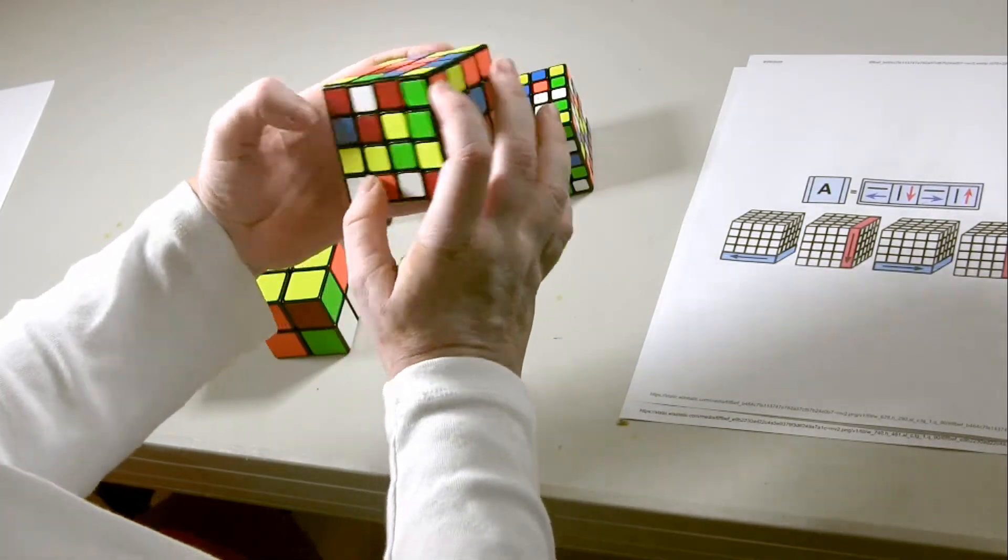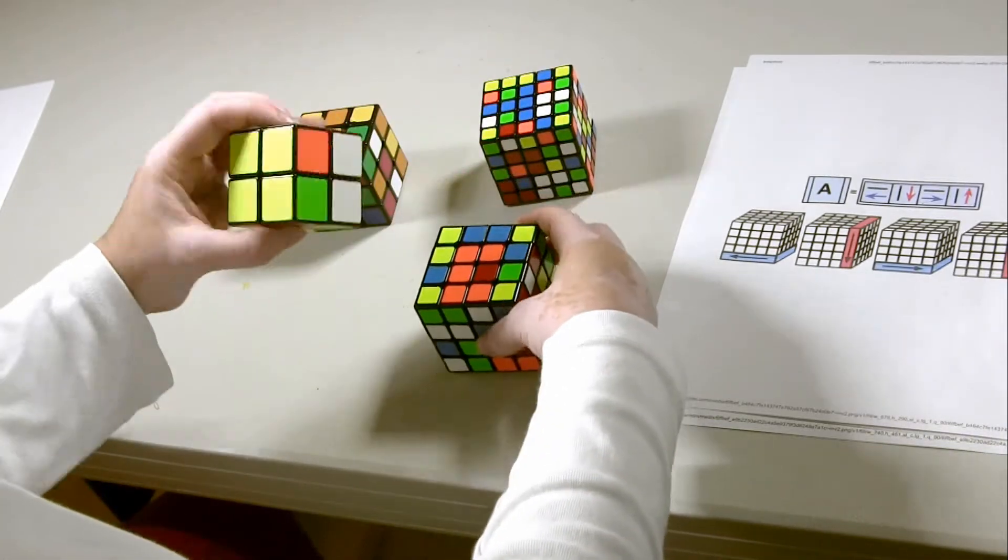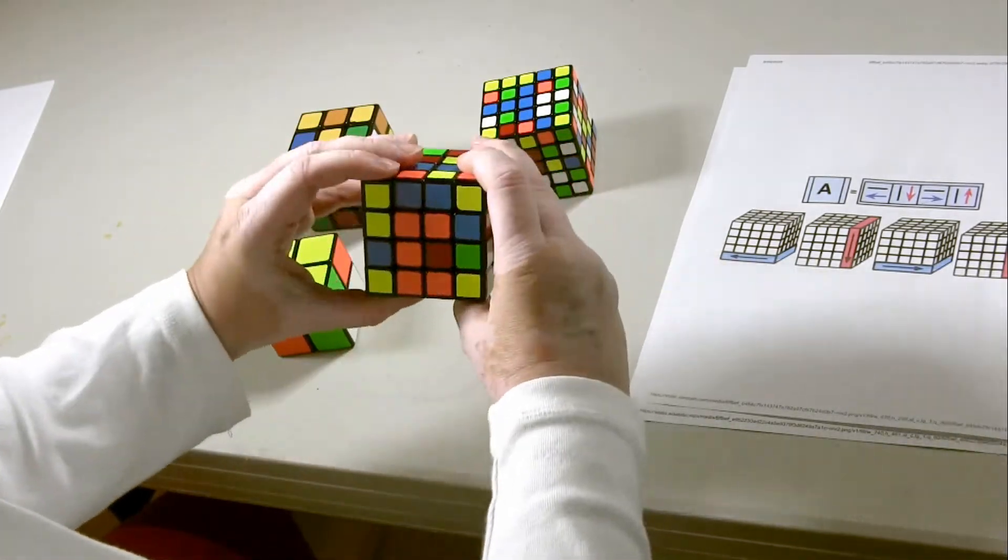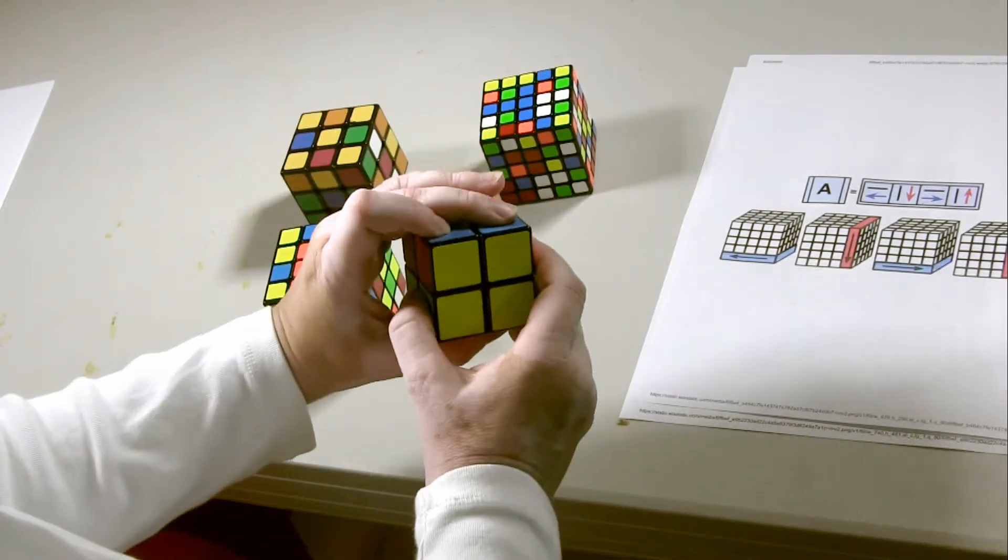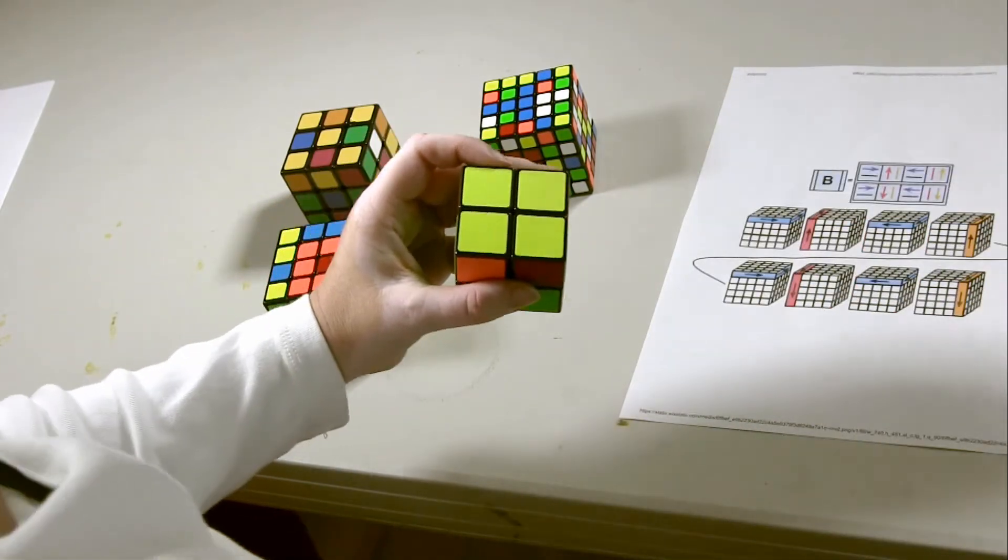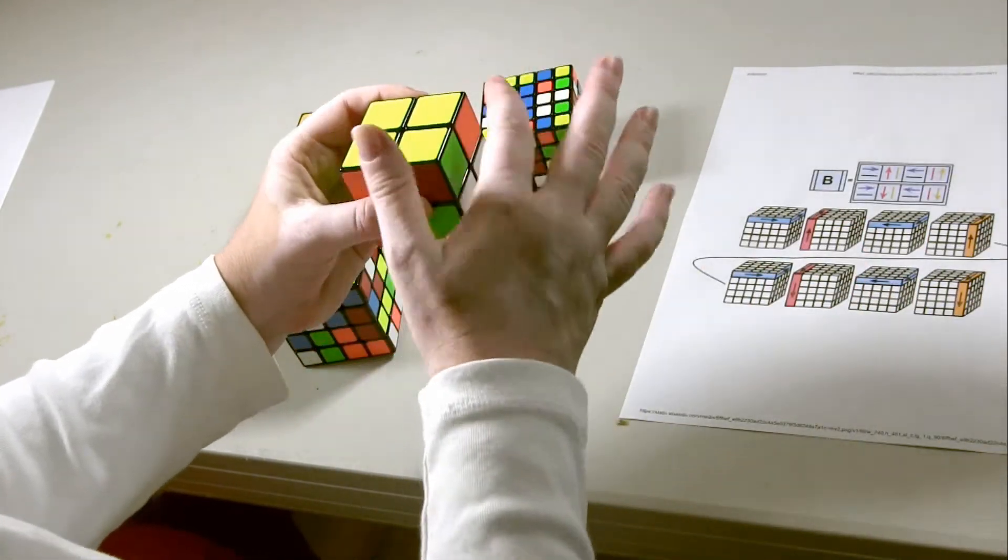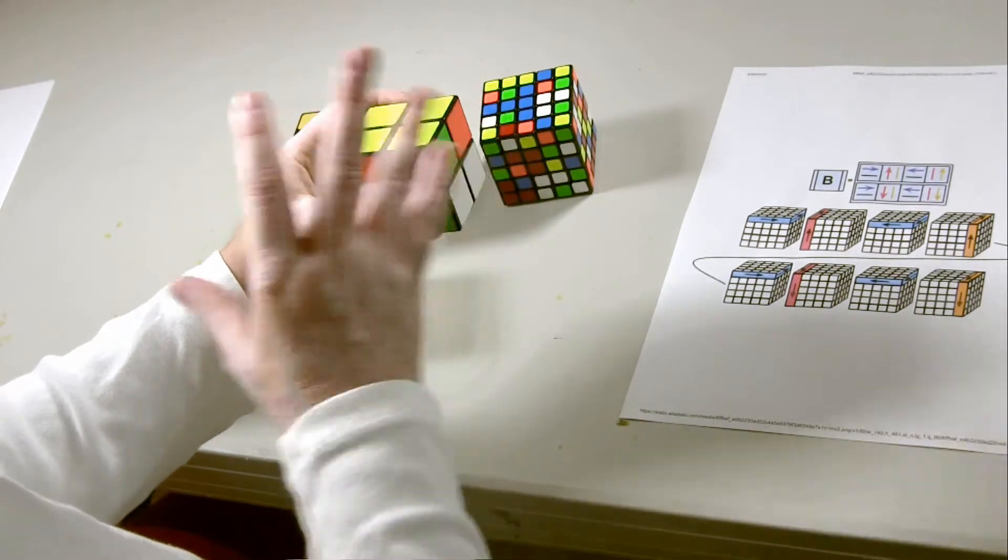There's one side that matches and the other three that do not. So, these three have one side that matches. We're going to start with the matching color in the back. We're going to do Formula B again, and this time, when we do Formula A to the top, the sides will all match.